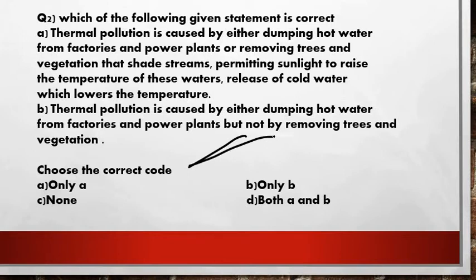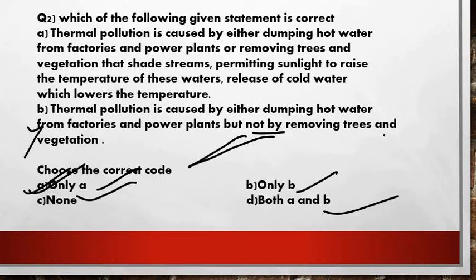Choose the correct code: only A, only B, none, or both A and B. Option A — only statement A — is the right answer. Statement B is wrong because removing trees and vegetation does raise temperature. It is incorrect to say vegetation removal does not contribute to thermal pollution.